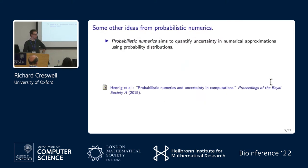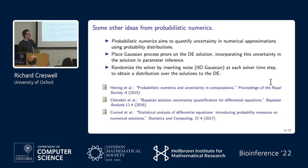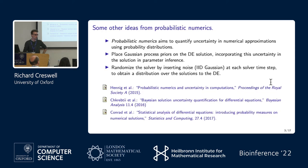We are not the first to notice this problem. The field of probabilistic numerics has been proposing techniques that address some of these problems. One idea is to model the solution to the differential equation as a Gaussian process, where solving consists of updating beliefs about that, getting a posterior distribution for the solution that can be incorporated into uncertainty for parameter inference. Another idea is to inject some noise term of an appropriately chosen magnitude at each solver time step, giving a distribution of solutions to characterize uncertainty from numerical approximation. But we think there's perhaps an alternative way to deal with these challenges.